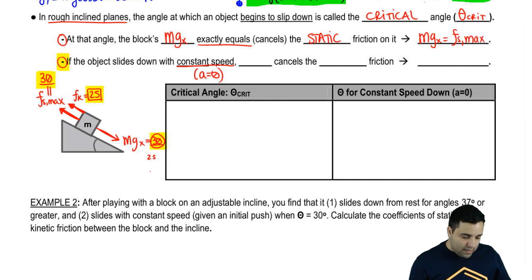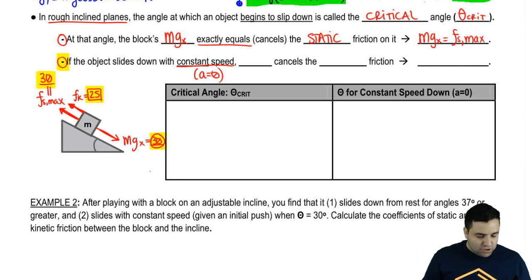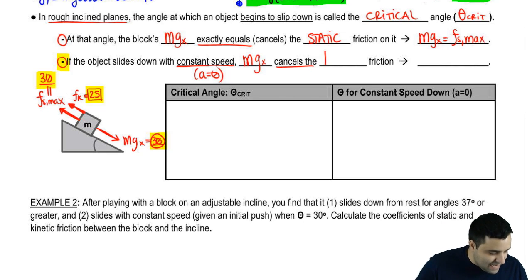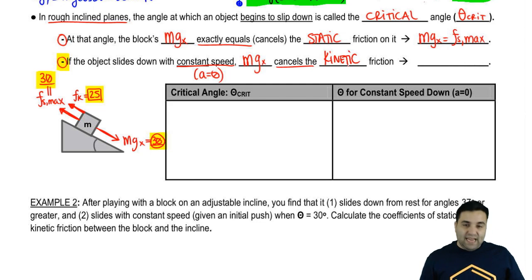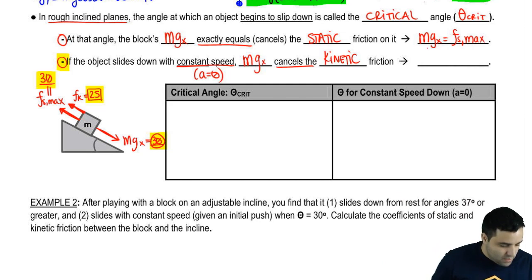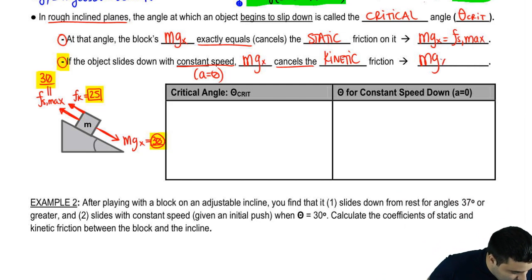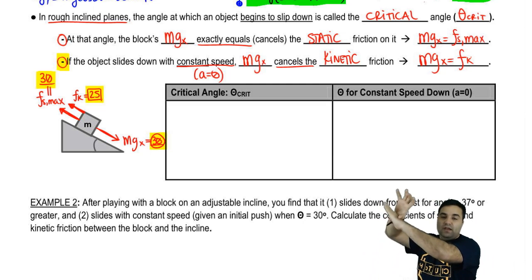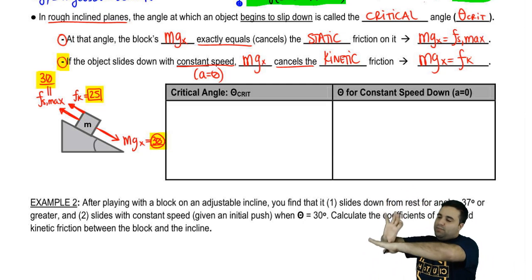So for constant speed, mgx cancels kinetic friction because they are equal in magnitude and opposite in direction — mgx equals kinetic friction. In the first situation, you're not moving and not touching the block; the surface gets tilted to a certain point and now the block accelerates down.